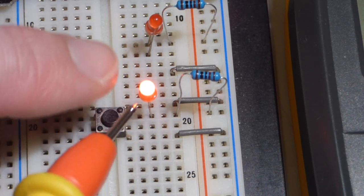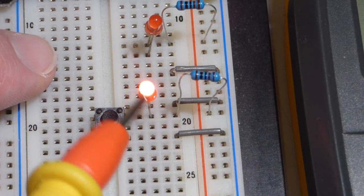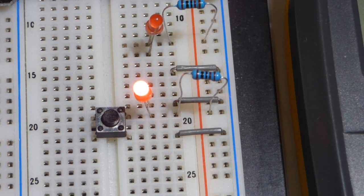And now that the switch is open, now it goes through the resistor. Now it has to go through the LED because it can't go through the switch. And that's the basic properties of the NOT gate.